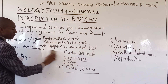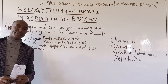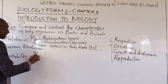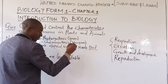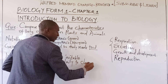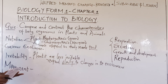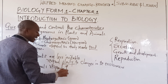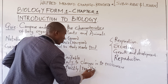We are at number three: irritability. Irritability is the ability of living organisms to detect changes in the environment and respond appropriately. Plants are less irritable because they respond slowly to changes in the environment. Animals, on the other hand, respond quickly or even rapidly to changes in their environment.